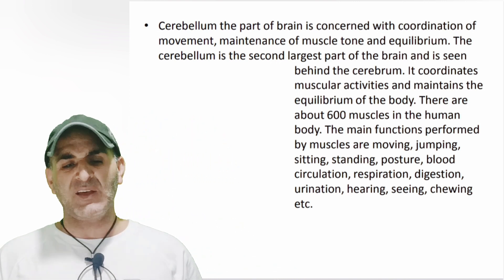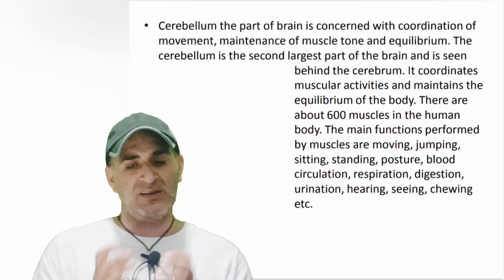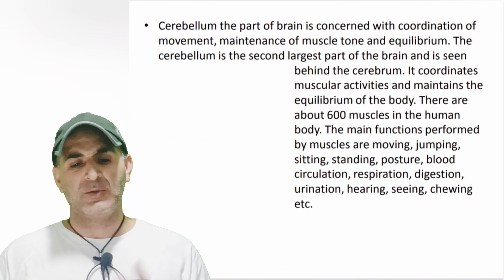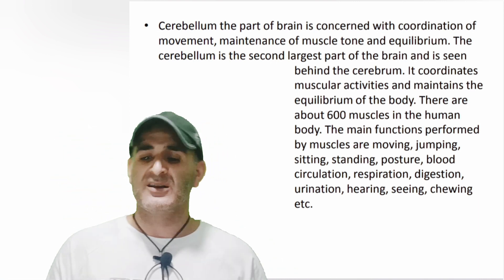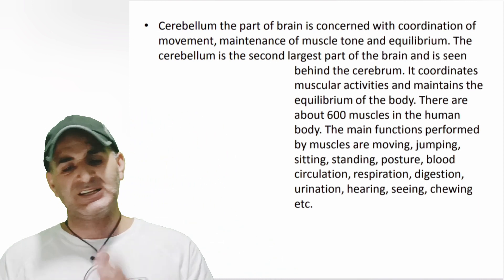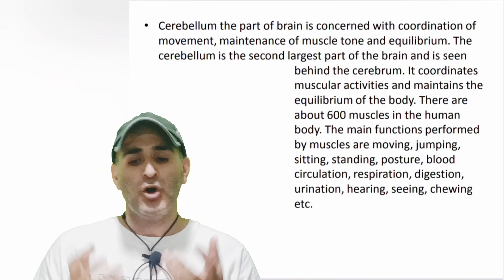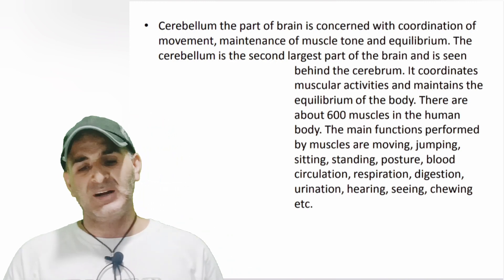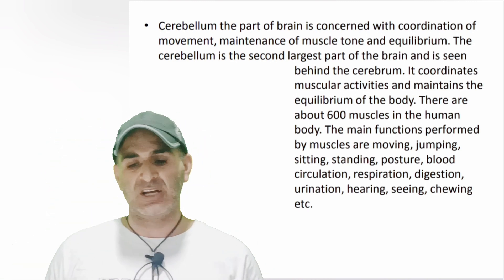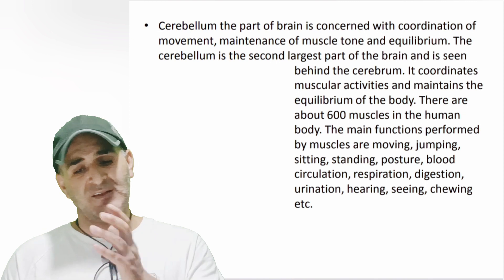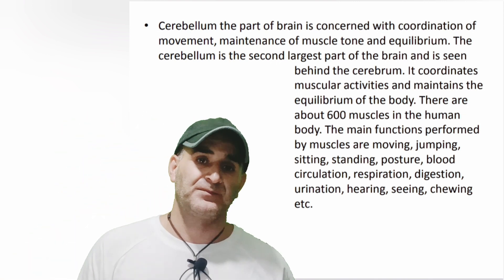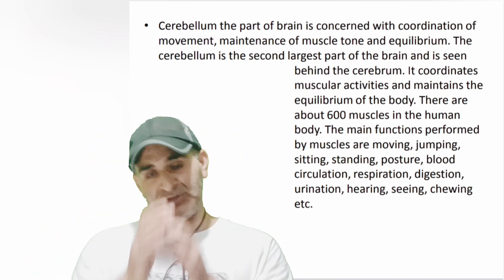There are about 600 muscles in the human body. The main functions performed by muscles are: moving, jumping, sitting, standing, posture, blood circulation, respiration, digestion, urination, hearing, seeing, chewing, etc. Physical development simply describes in which case the physical organism changes or advancements are made, and in which case the organism changes and controls its muscles.